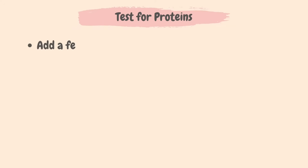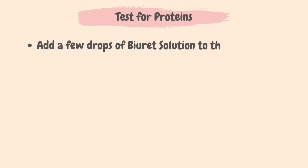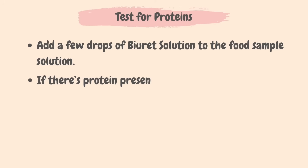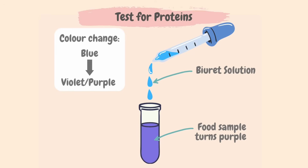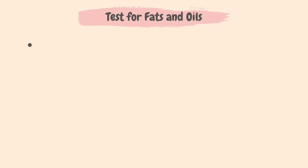The food test for proteins: add drops of Biuret solution to the food sample. A positive test will show a color change from blue to violet or purple. If the color changes from blue to purple, it confirms that the food sample contains protein.